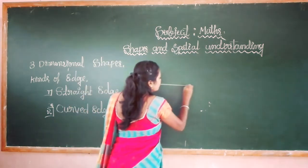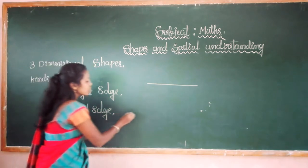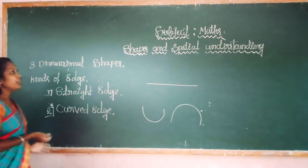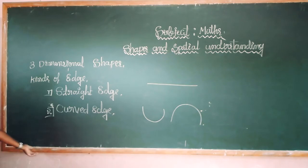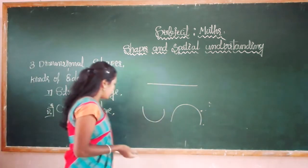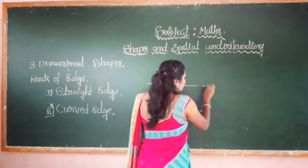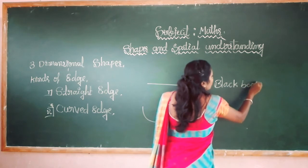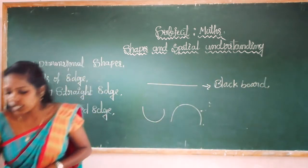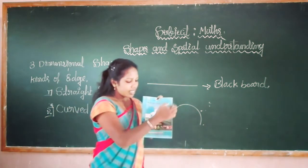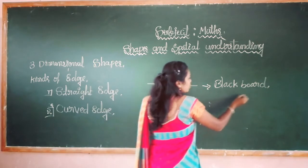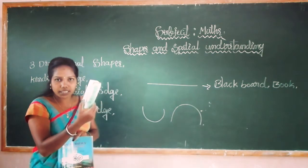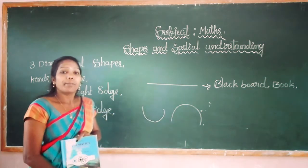Straight edge means this is called straight. This is called curved. Give more examples for the straight edge. For example, look at the blackboard now — the edges of the blackboard are straight. New examples for the straight edge: first one is blackboard, then next one is your textbook. Is it a straight edge or curved edge? It is a straight edge. And your notebook, and mobile, and also duster, table, and bench, and so on.